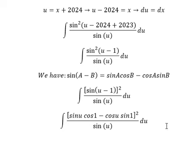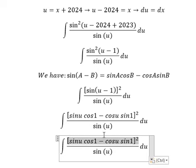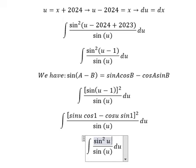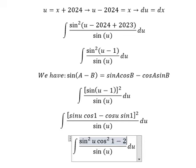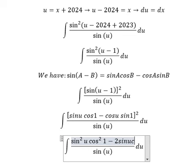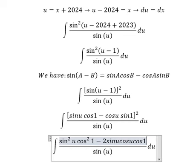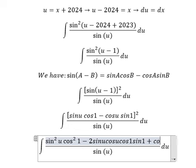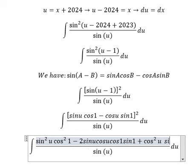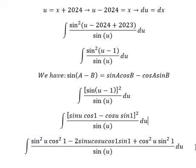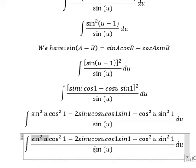Now we have the power of two, so we need to expand, and you get like this: sine²(u) divided by sine(u), or cosine²(u) divided by sine(u). Now we simplify — sine²(u) divided by sine(u), sine(u) divided by sine(u), so you get like this.